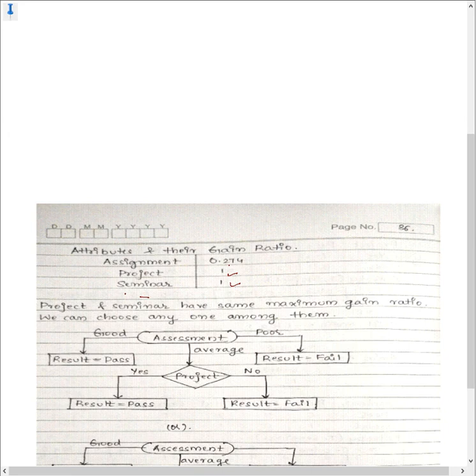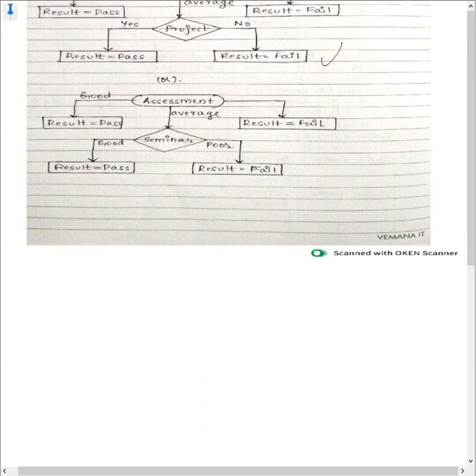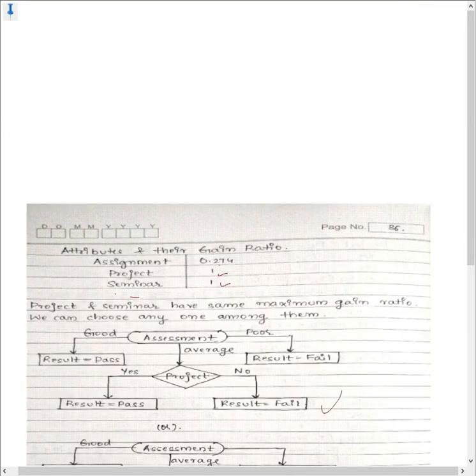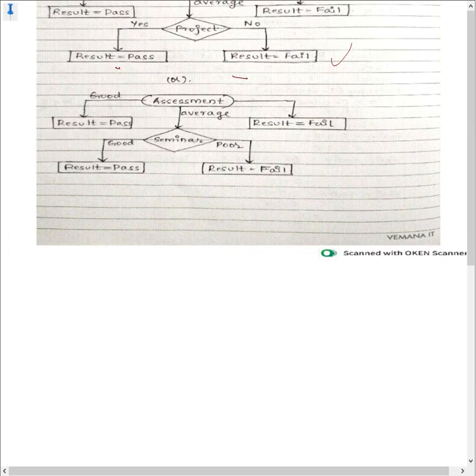Since project and seminar are tied for maximum gain ratio, we can choose either. If we choose project as the splitting node for the average subtree: on the yes branch, the result is pass; on the no branch, the result is fail. This completes that subtree.